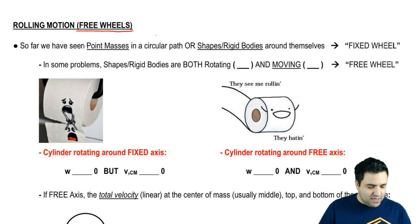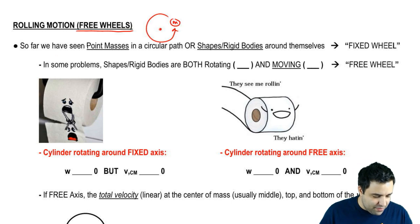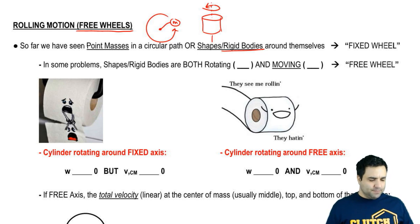What we've seen is we've seen either a point mass moving around a circular path, or we've seen rigid bodies moving around themselves. So imagine a cylinder that is free to rotate around its central axis, something like this. So think of this as a fixed wheel. These are fixed wheels. They are fixed in place.